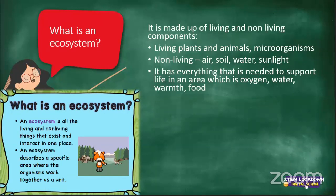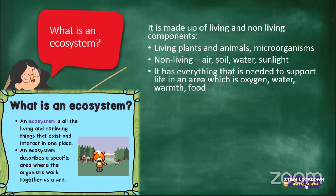For the animals and plants that live in an ecosystem, it is basically their house. Everything they need is there. Just like in our homes — we've got a bed, food, a fridge, all the things we need. We don't rely on our neighbours to provide us with certain things. Just like that, everything needed to support life for that plant and that animal is in the ecosystem.